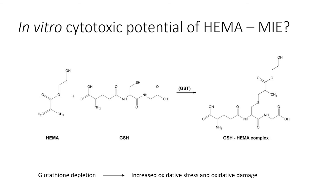The effect on cell viability seems to occur only when almost all glutathione is bound to HEMA. From these findings, one can only advise to reduce HEMA leakage from HEMA-containing products as much as possible. In a clinical setting, ensuring good curing of the materials is therefore a good strategy.